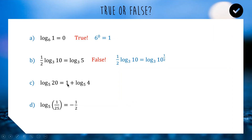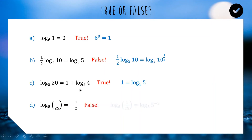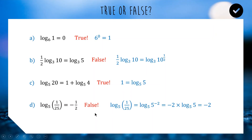Question c: log base 5 of 4 plus 1 equals log base 5 of 20. We write 1 as log base 5 of 5, then combine by multiplying subjects: log base 5 of 5 times 4, which is log base 5 of 20 — so this is true. Question d: log base 5 of 1/25 equals negative one half — this is false. We write 1/25 as 5 to the power of minus 2, bring the minus 2 out front, and since log base 5 of 5 is 1, we get minus 2, not negative one half.